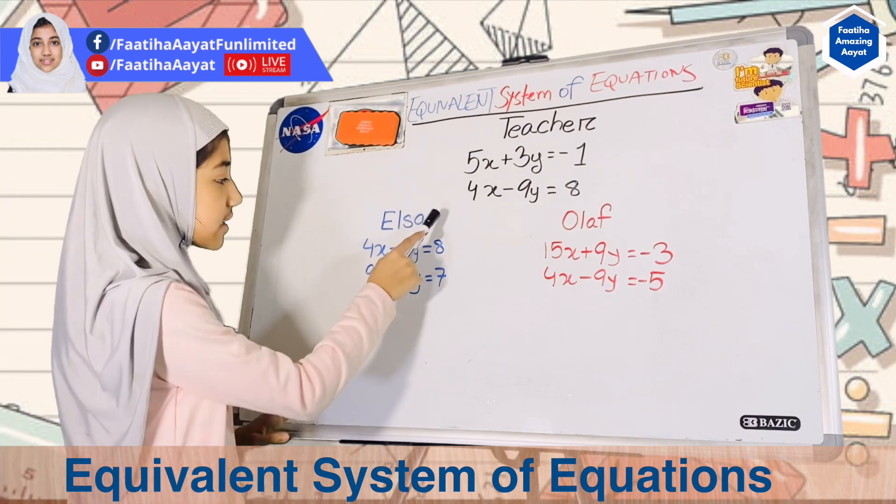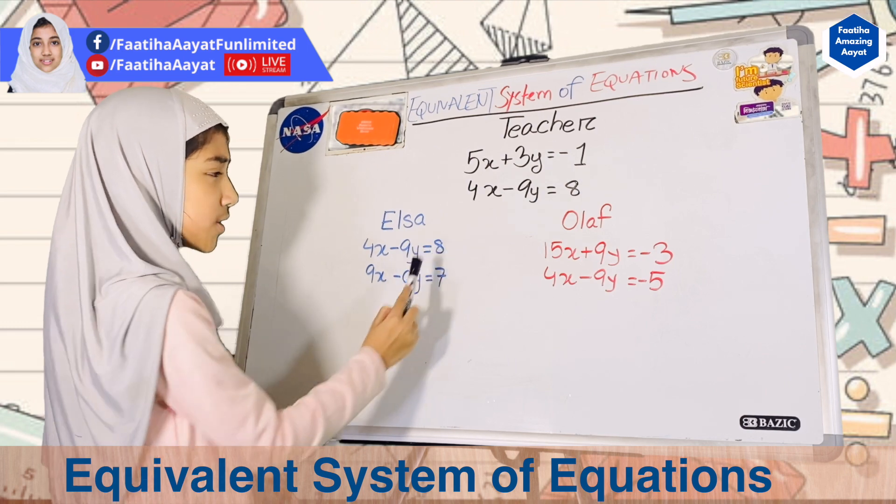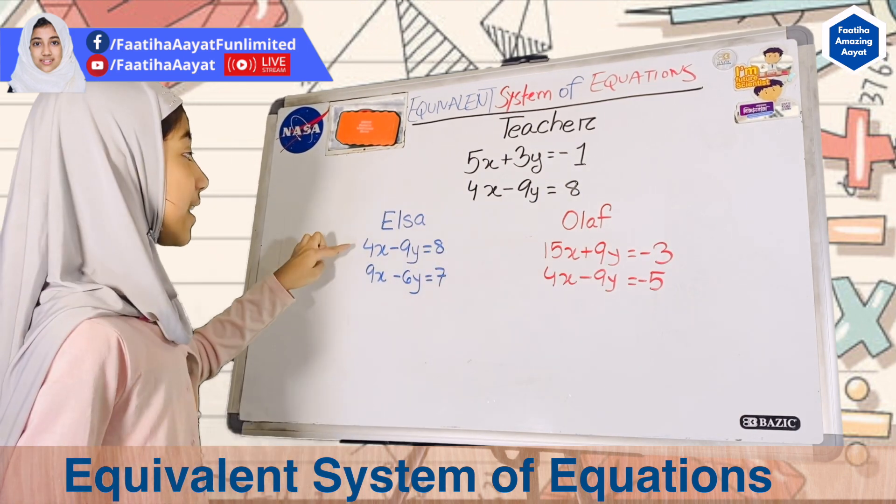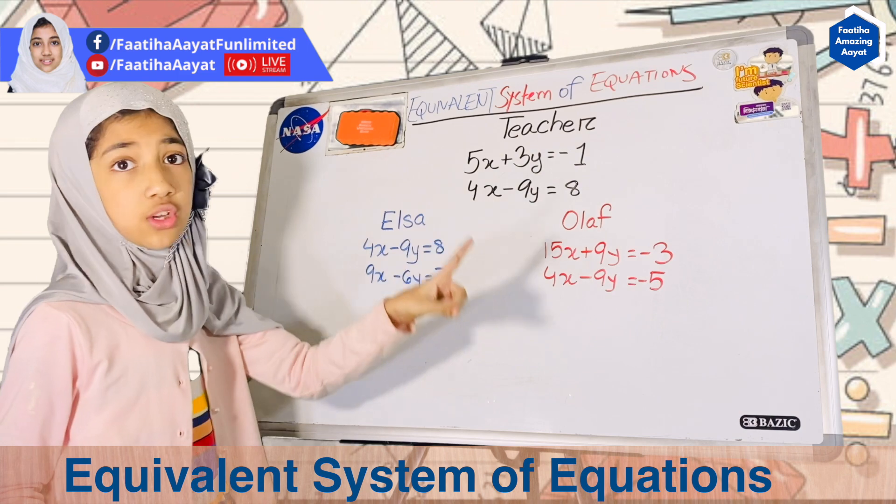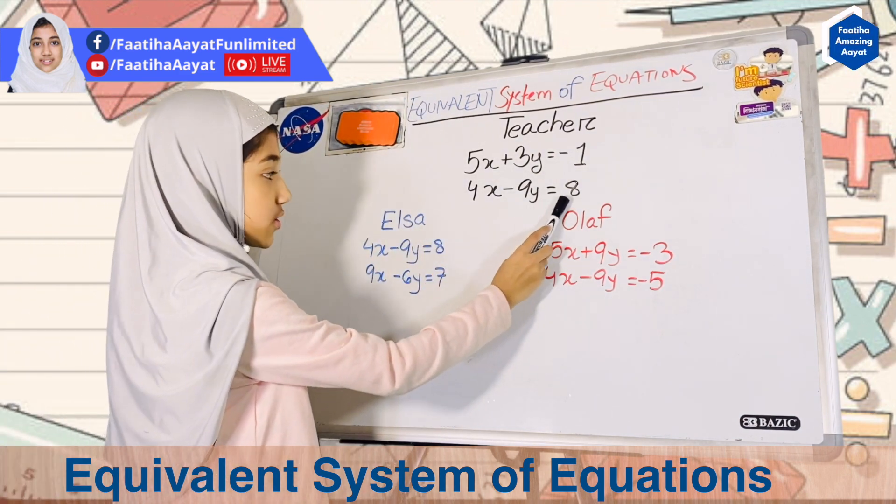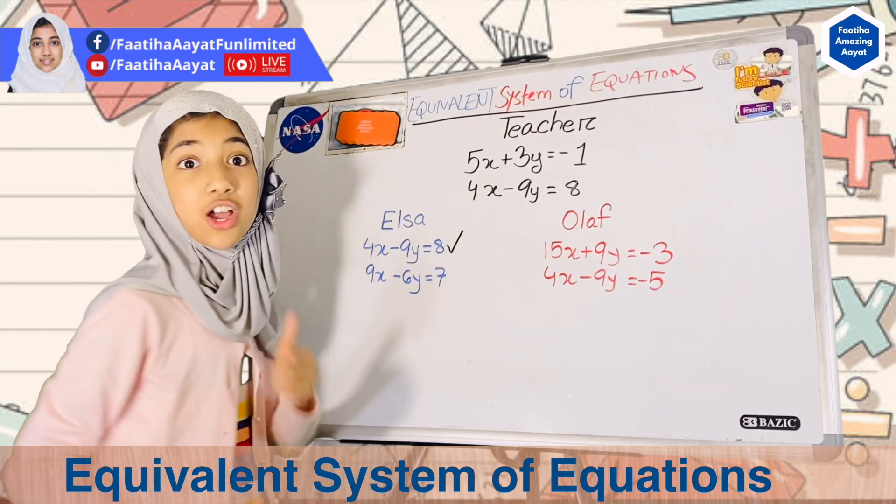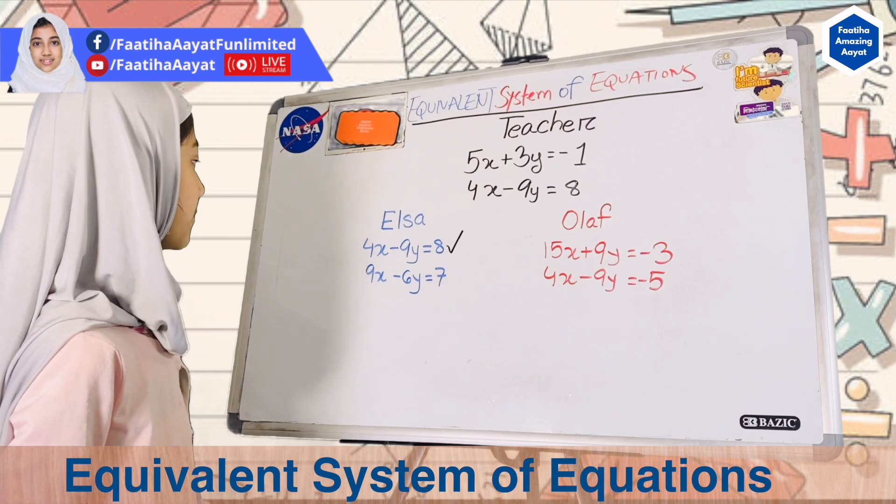Elsa said that 4x minus 9y equals 8, which is actually correct because that is the exact same thing as one equation that the teacher gave both of them: 4x minus 9y equals 8. These are the same. So Elsa's first equation is correct.